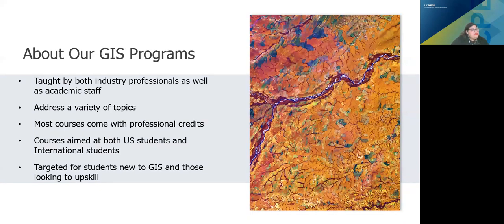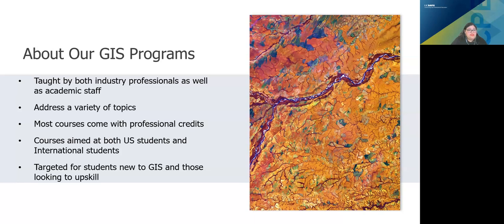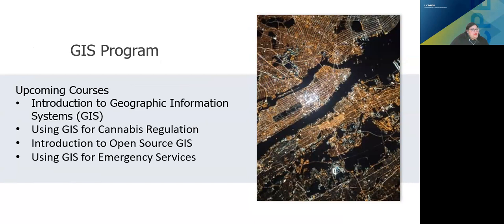About our GIS programs: CPE has a GIS program and a GIS specialization. Both options are taught by industry professionals as well as academic staff. Some of the courses covered in our GIS program address a variety of topics, from using GIS for cannabis regulation to Python programming for GIS. Our courses are accessible for both domestic US students and those internationally as well. Our courses have two audiences: those who are new to GIS, and those with some experience who are looking to further their skill set. Our GIS program courses are open to the general public, and most short-term courses range from one to two weeks.